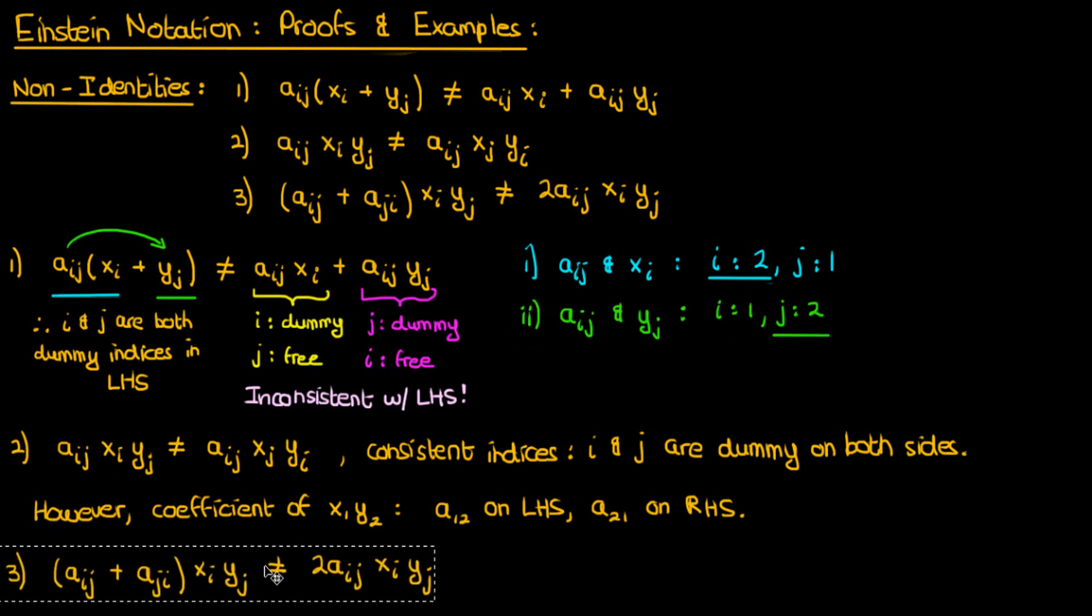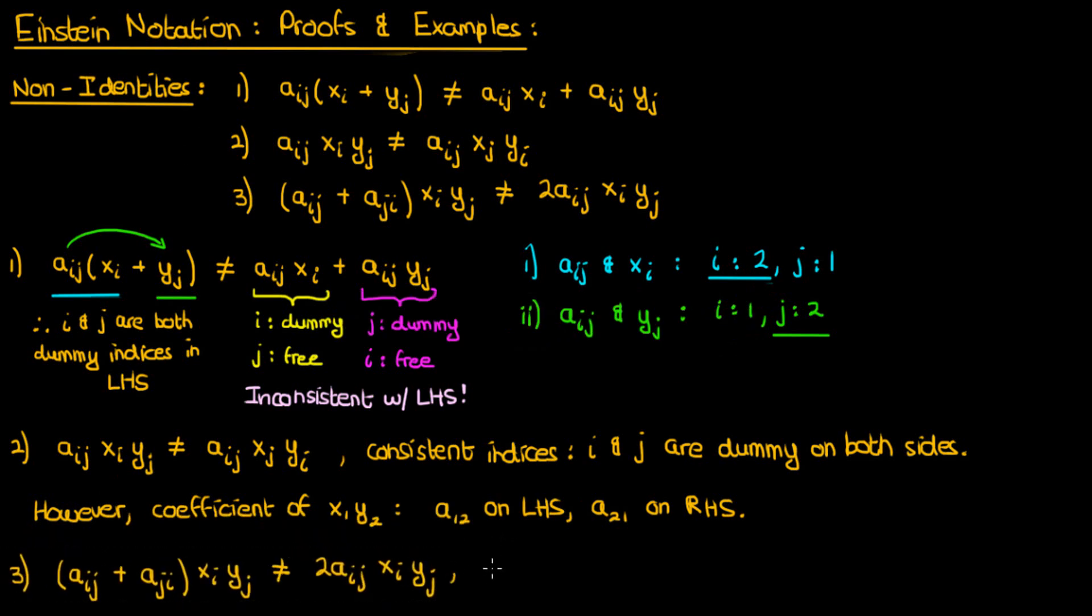The third non-identity also follows a similar logic when it comes to the proof. Again, there's no problem with the consistency of the indices. You can verify that both i and j are dummy indices on both sides. However, because aij and aji aren't necessarily equal,